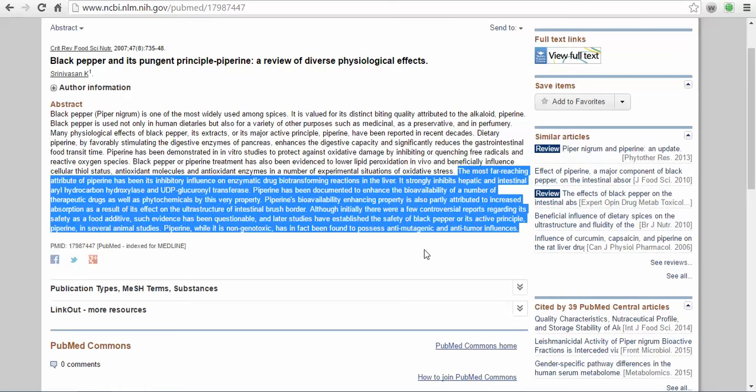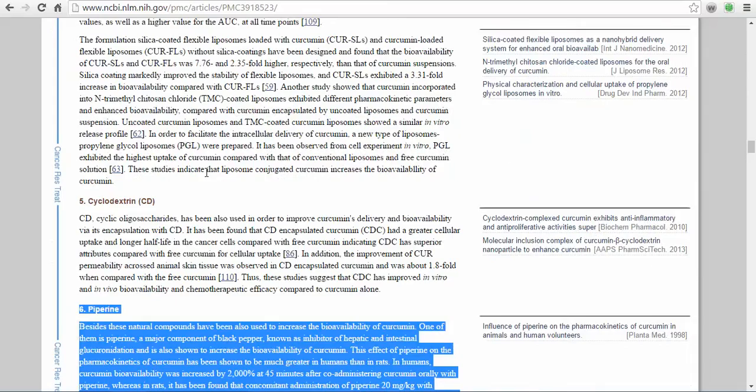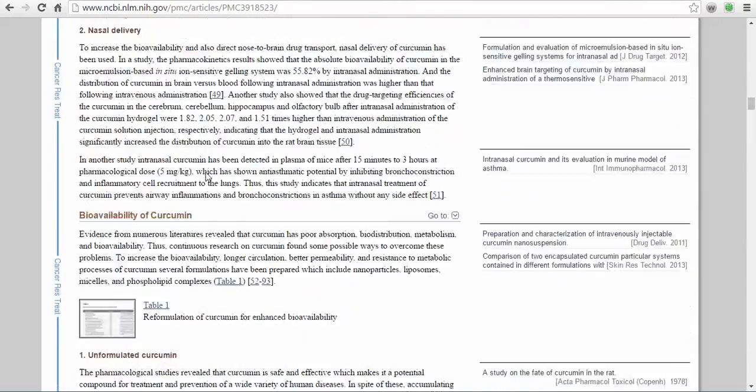So that's one. This study here, 'Influence of Piperine on the Pharmacokinetics of Curcumin in Animals and Human Volunteers,' basically they're showing by mixing piperine with turmeric or curcumin, it drastically increased the bioavailability. In fact, in this other study here, another US NIH study...